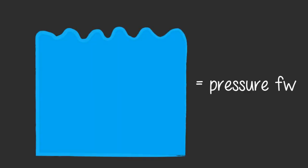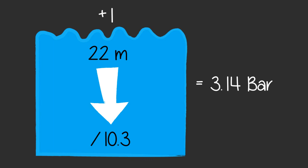And that means the pressure in freshwater is the depth divided by 10.3 plus 1 for the surface pressure. For example, the pressure at 22 meters of freshwater is 3.14 bar.